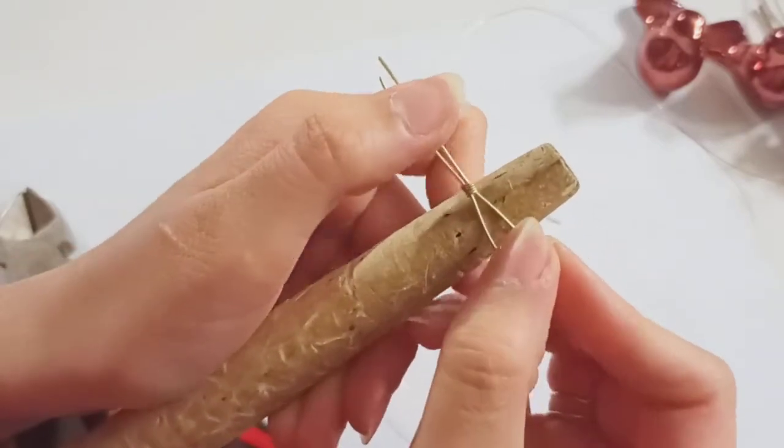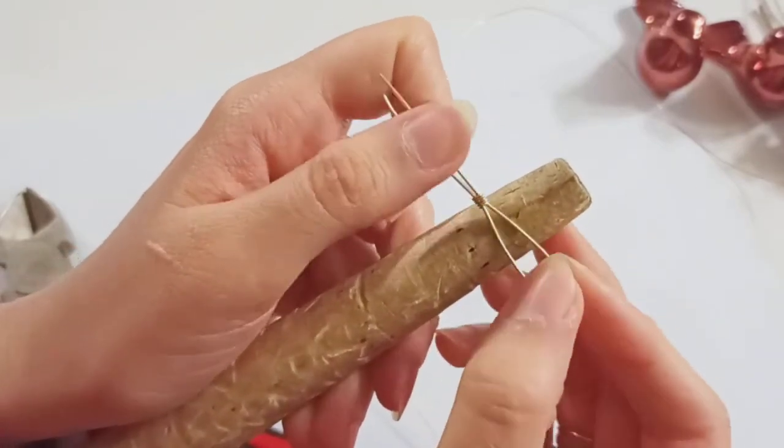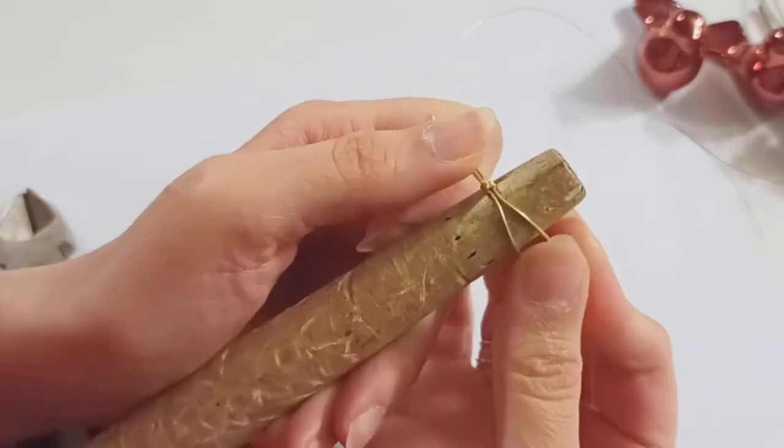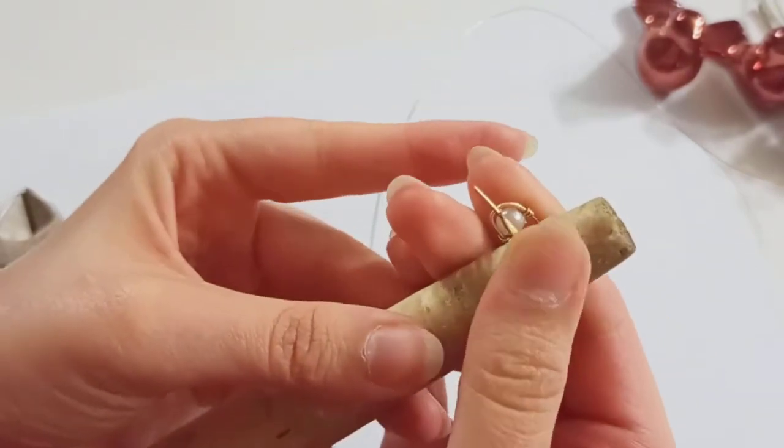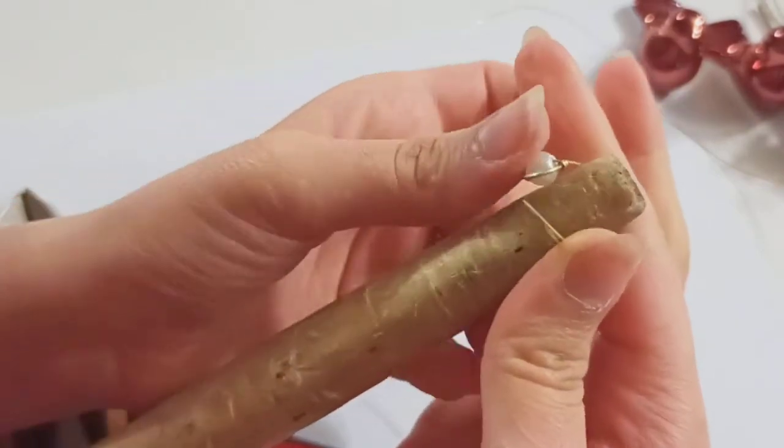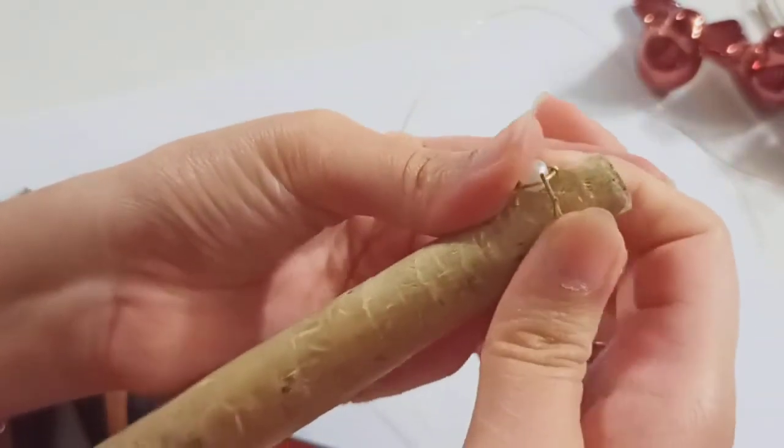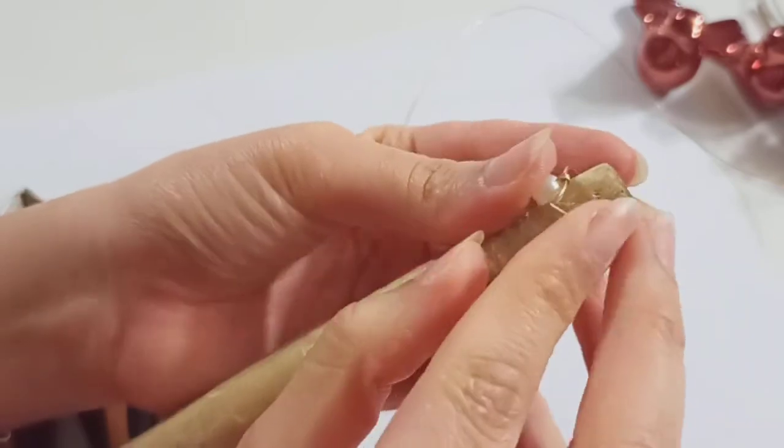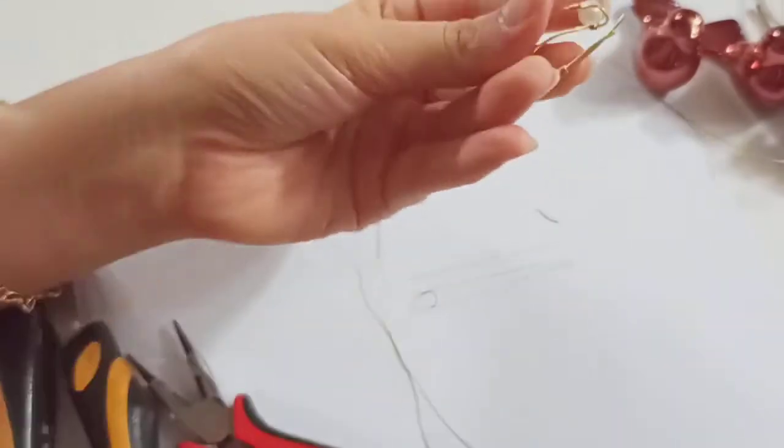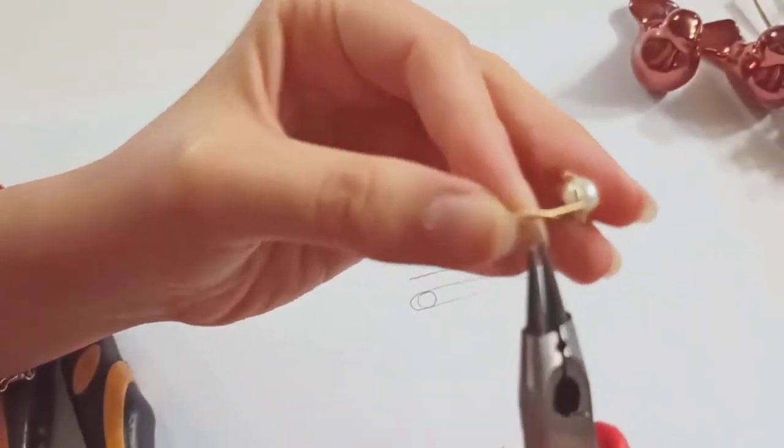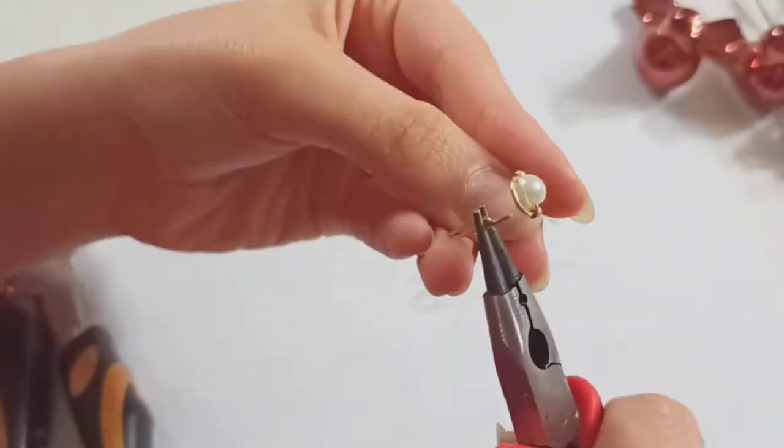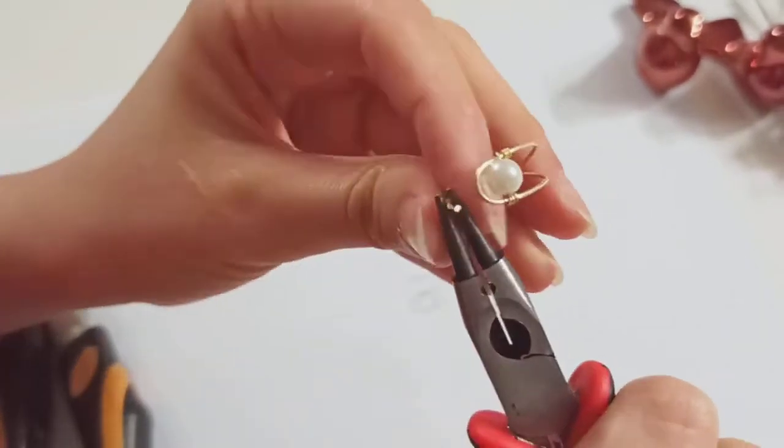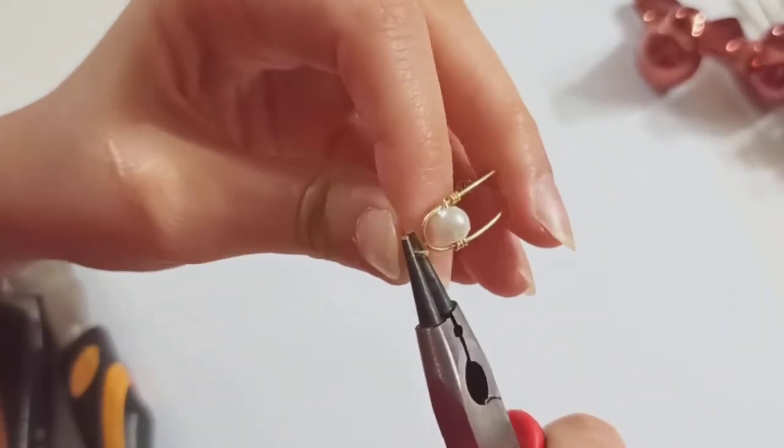At the ring size that we had determined on our mandrel or any other cylindrical shape like pen or pencil. Okay just wrap it all around and this is the important part. We should thread these two strands into this part and just fix them.